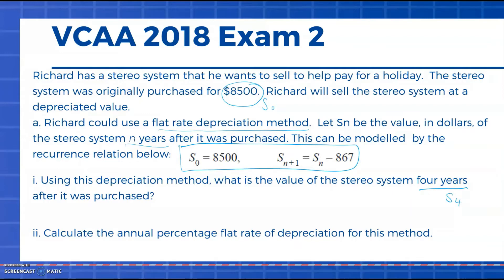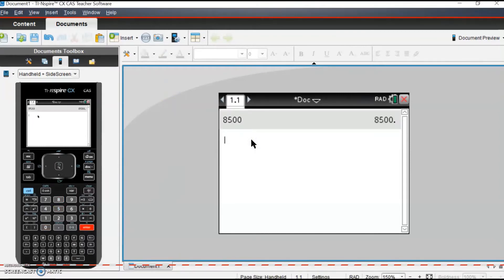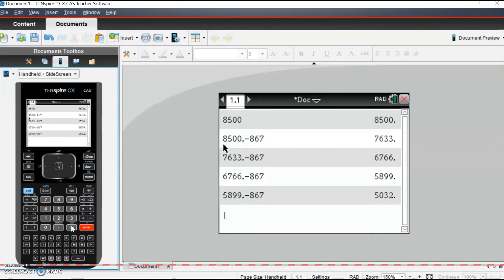I'm going to jump to our calculator to review how to use it for recurrence relations. In our calculator, we want to enter our initial value as our start point, 8500, and hit enter. Now we're going to use the answer function to help us find our recurrence relation. Using the answer function, second and minus, we're subtracting 867 each time. So hit enter and that's after one year, two, three, and four. That gives us our value for S₄ at $5,032.